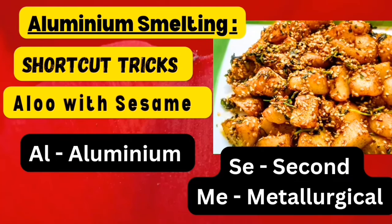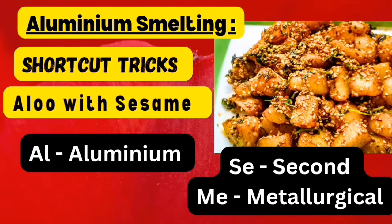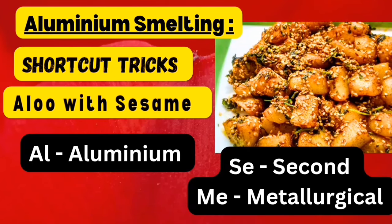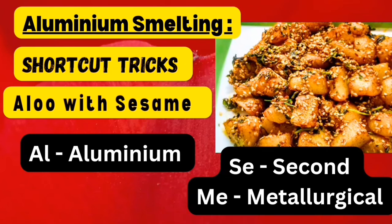In 'aloo,' AL stands for aluminium. Take the word 'sesame' — here SE stands for second, ME stands for metallurgical. It means aluminium smelting is the second metallurgical industry in India.